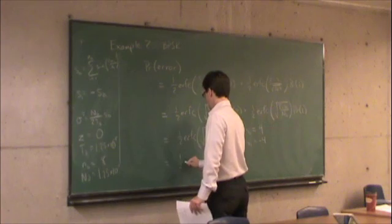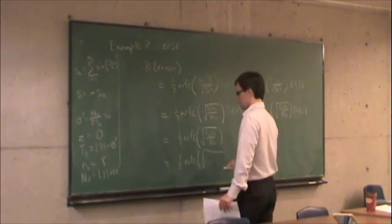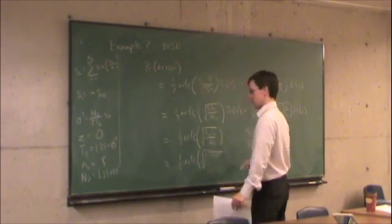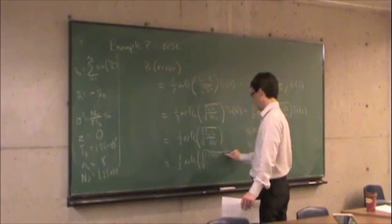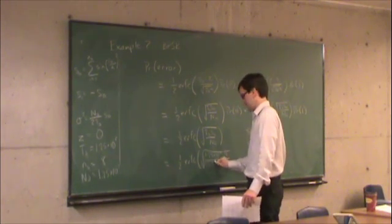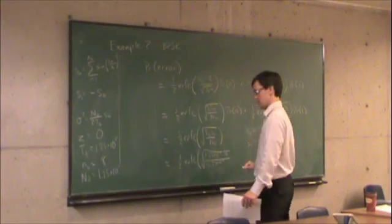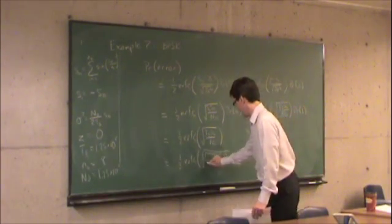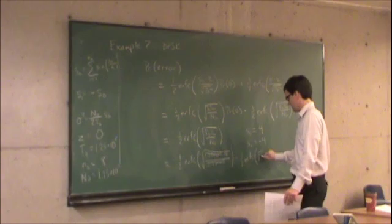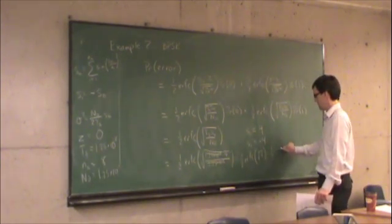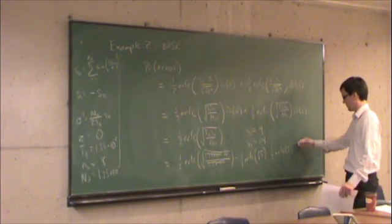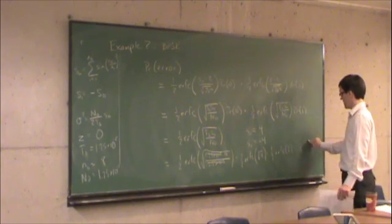So, we have 1 half per C, root 1.25 times 10 to the minus 5th, times 4, divided by 1.25 times 10 to the minus 5th. So, if we end up with that, we end up with that, we end up with that, cancel with that. We get 1 half per C, root of the square root of 4, 1 half per C of 2, which is the same as we had before, 2.34 times 10 to the minus 3.